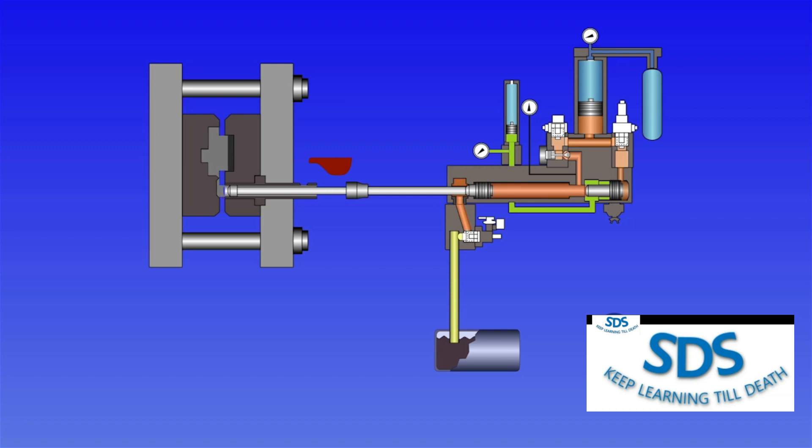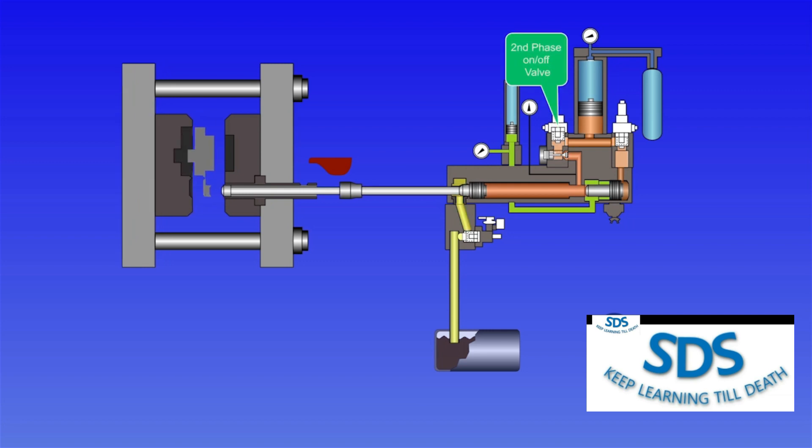As the intensification piston starts to move, the large check valve mounted under the second phase on-off valve is closed by the spring and back pressure from the injection cylinder.